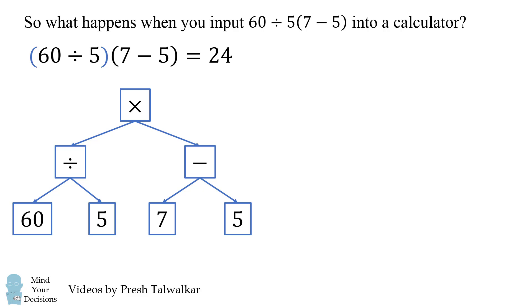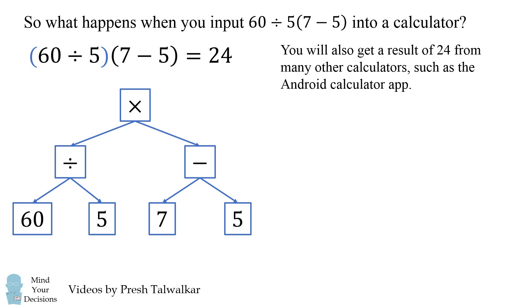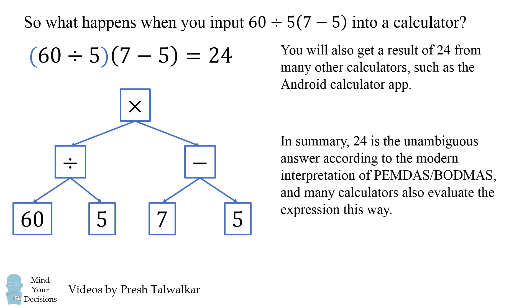Google is not the only calculator that will do this. Many calculators in fact will give you the answer of 24. One such calculator is the Android calculator app. If you put in 60 divided by 5 parentheses 7 minus 5, you'll also get the answer of 24. I've also tried this on many other calculators. You'll also get the answer of 24. But I wouldn't be surprised if some calculator did give the answer of 6 if it evaluated it according to the other binary tree. But from what I've seen, almost every calculator gives the answer 24. So in summary, 24 is the unambiguous answer according to the modern interpretation of PEMDAS or BODMAS, and many calculators also evaluate the expression this way. So I would say 24 is the correct answer to this expression.